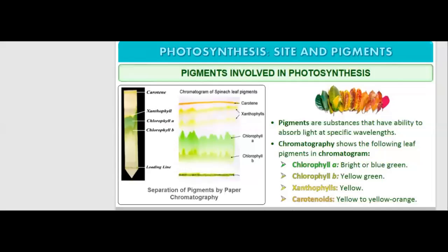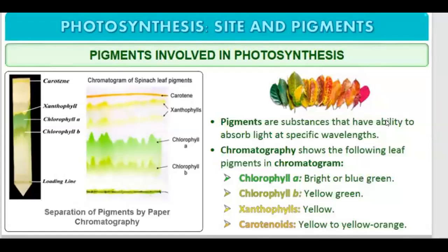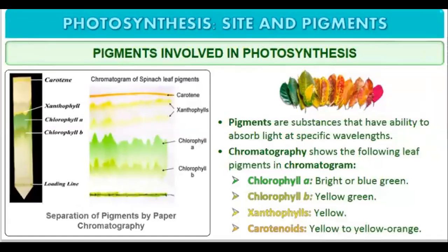Hello students, welcome to Easy Biology Tutorials. We are continuing with the photosynthesis chapter and now we are going to read about the site and the pigments of photosynthesis — what is the site of photosynthesis and the pigments involved. Pigments are the substances that have the ability to absorb light at specific wavelengths.